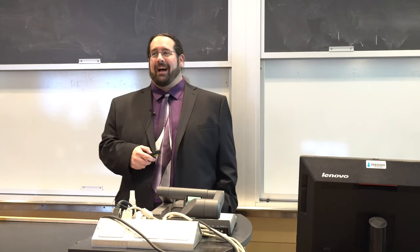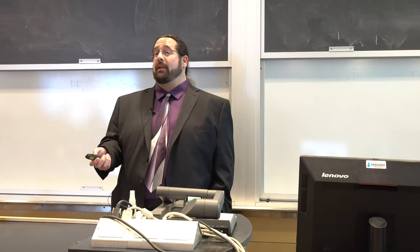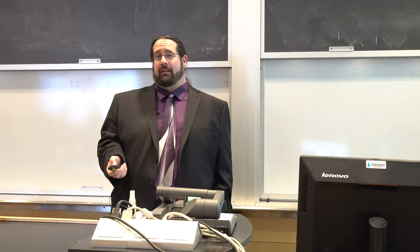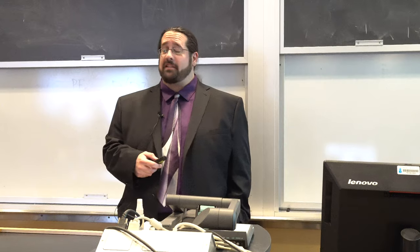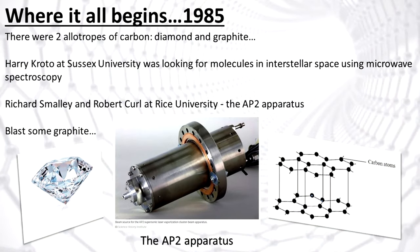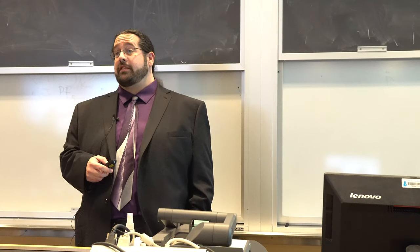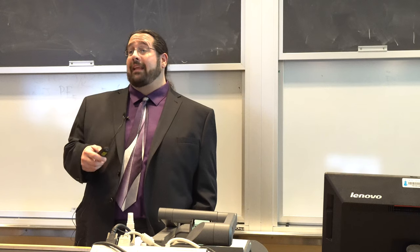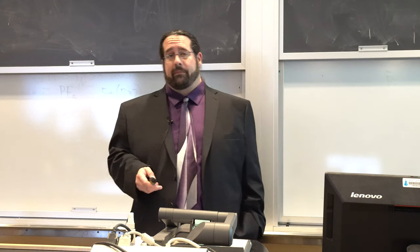1985. At the time there were two known allotropes of carbon: diamond and graphite. There was a gentleman, Harry Kroto, working for Sussex University, who was examining interstellar space using microwave spectroscopy. Basically he was looking at red giant stars to find polyalkynes, hopefully long chains of them.